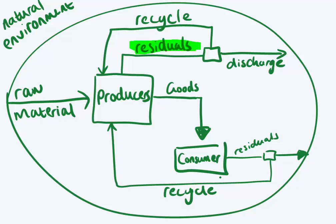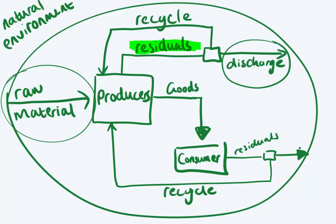Have a look at the discussion on the Fundamental Balance Principle. The raw materials coming into this system are equal to everything that's eventually discarded by the producer and everything that's eventually discarded by the consumer. Everything that comes from nature eventually goes back into nature.